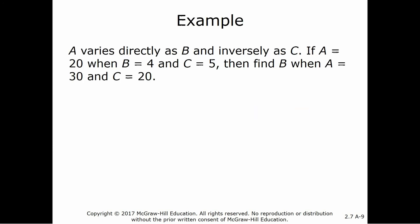So say we have a varies directly as b. So a varies directly as b and inversely as c. Here's our formula. But we really need to find k. So we're going to need some information. Well, we're given some information. If a equals 20, when b is equal to 4 and c is equal to 5.